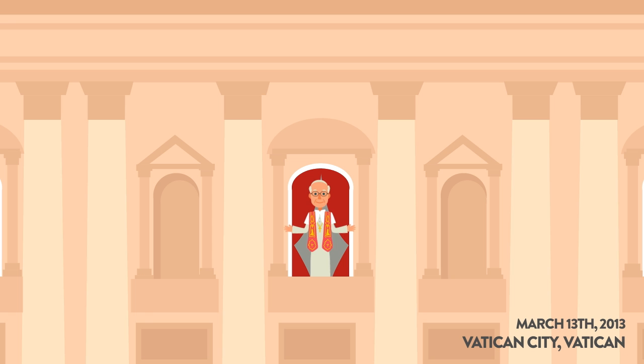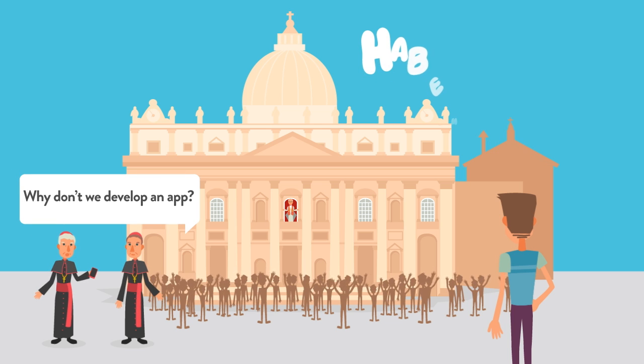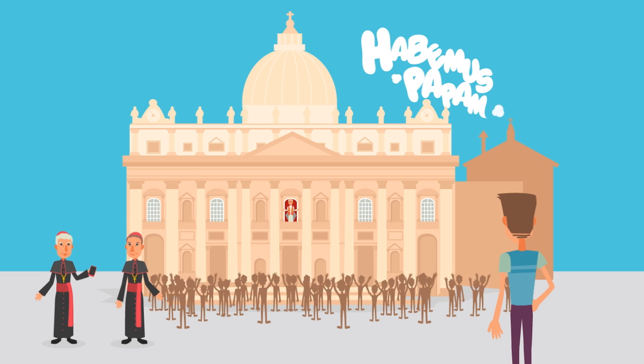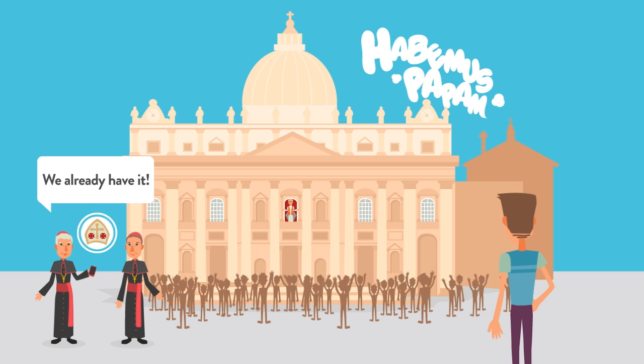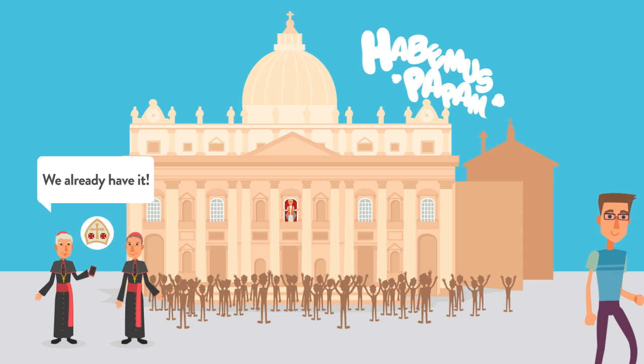Cardinal Jorge Mario Bergoglio of Argentina was elected the 266th Pope and took the name Francis to become the first Jesuit Pope, the first Pope from the Americas and Southern Hemisphere, bringing hope to millions.